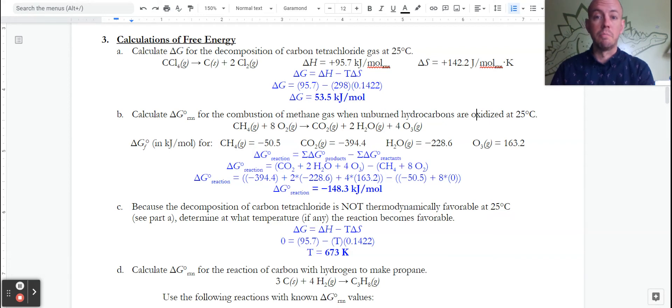We've got 95 minus that. We still have 53.5. Sign is really important. And units are really important for any thermo, whether it's delta H, delta S, or delta G.